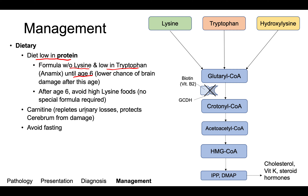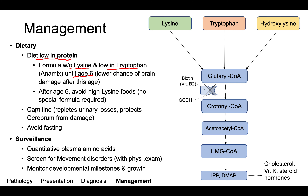As with all organic acidemias, we want to avoid the fasting state. Routine surveillance would include quantitative plasma amino acids to quantify the amount of glutaryl-CoA and other amino acid metabolites present in the blood. Every time we see the patient, we want to screen for movement disorder with a complete neurologic exam, given the devastating effects on the brain. We also want to monitor developmental milestones and growth, as these patients may be predisposed to developmental delay.